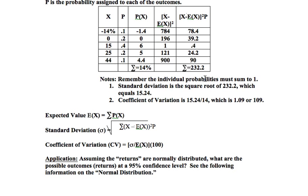Moving over to the coefficient of variation — don't get confused between variance and coefficient of variation. The coefficient of variation is a relative measure whereby we take the standard deviation, 15.24, and divide it by the expected mean. Standard deviation divided by the mean, and we come up with 1.09, or put to a base of 100, it's 109.